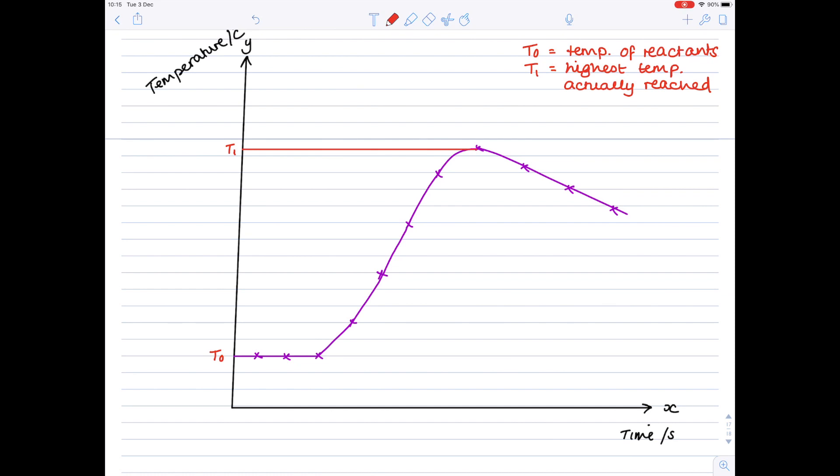So this is the crucial bit here that makes it higher level chemistry, is we have to extrapolate our graph. And so what that means is drawing a straight line from here, extrapolating up, which will give us the accurate reading of the highest temperature. And so we're going to call that T2. And we're going to describe that as being the temperature that would have been reached if there was no heat loss to the surroundings. It's really important that you can do this extrapolation.